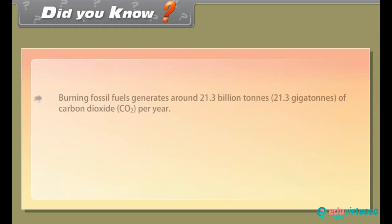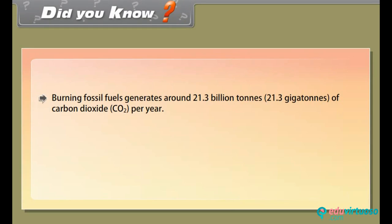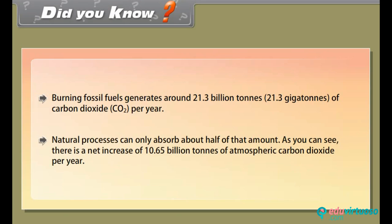Did you know? Burning fossil fuels generates around 21.3 billion tons (21.3 gigatons) of carbon dioxide (CO2) per year. Natural processes can only absorb about half of that amount. As you can see, there is a net increase of 10.65 billion tons of atmospheric carbon dioxide per year.